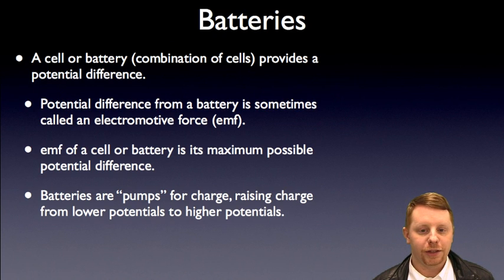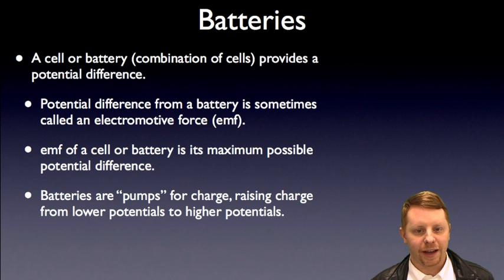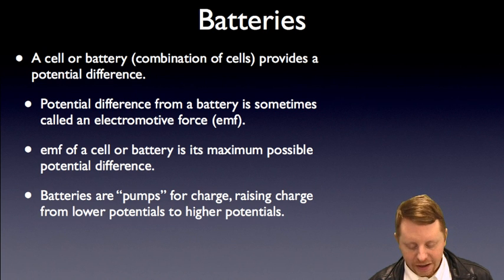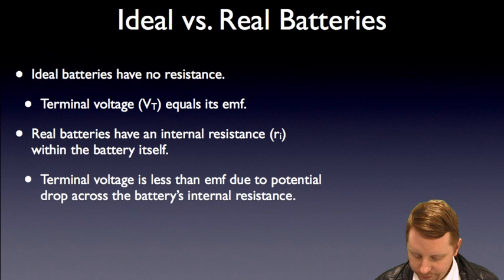Let's start by taking a look at batteries. A cell or battery, which is a combination of cells, provides a potential difference. The potential difference from a battery is sometimes called an electromotive force or EMF. Note it's not really a force in physics terms. EMF is just a historical name we use. The EMF of a cell or battery is its maximum possible potential difference. Batteries are pumps for charge, raising charge from a lower potential to a higher potential in a circuit.